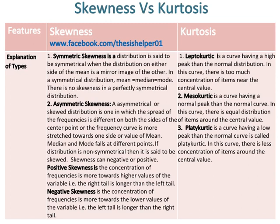Leptokurtic is a curve having a higher peak than the normal distribution. In this curve, there is too much concentration of items near the central value. Mesokurtic is a curve having a normal peak relative to the normal curve, with equal distribution of items around the central value. Platykurtic is a curve having a lower peak than the normal curve, with less concentration of items around the central value.